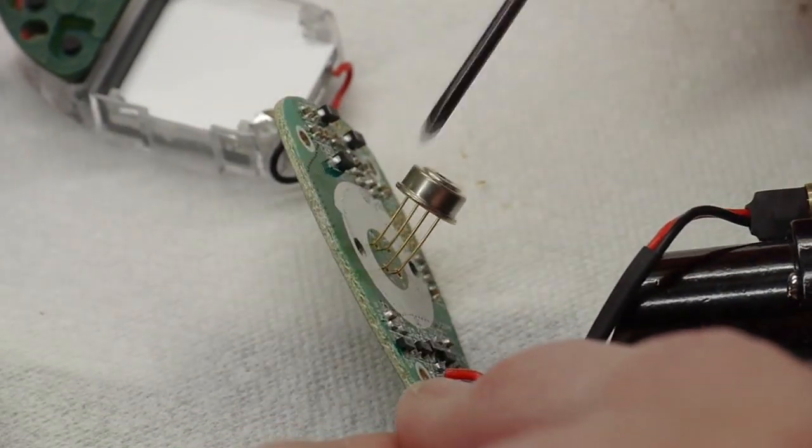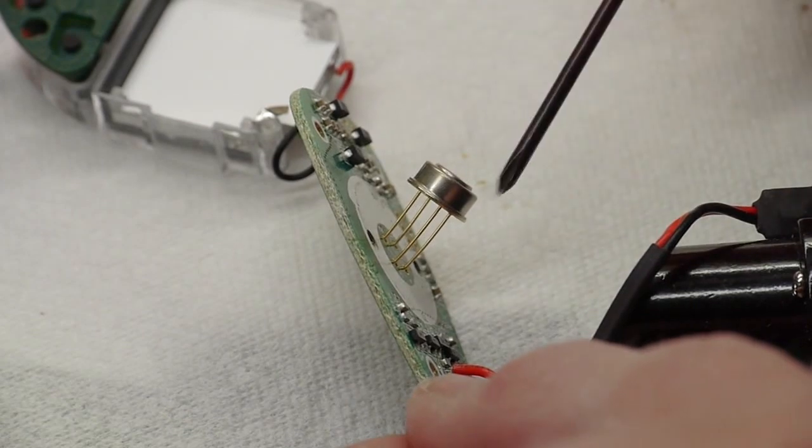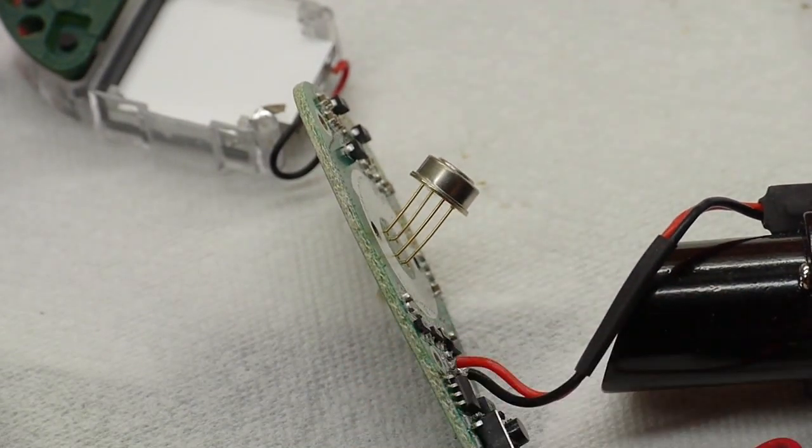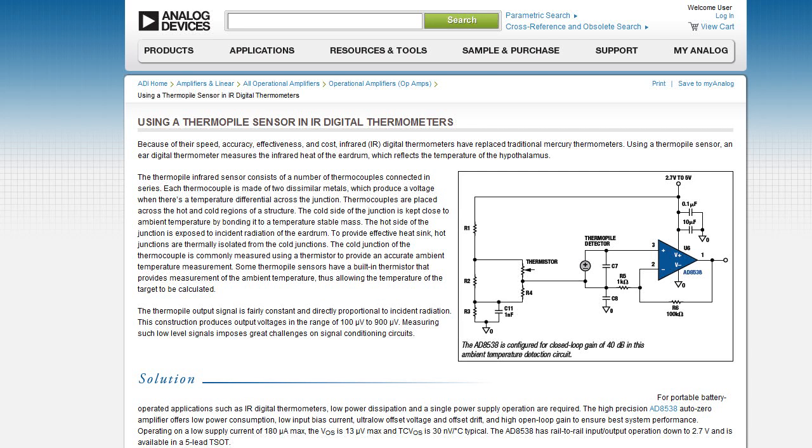So the plan now is to desolder this from the board and hook it up to an Analog Devices amplifier. I found an app note on the web using a very low DC offset chopper type op-amp. Yeah, you can amplify that millivolt signal from the sensor here and turn it into something like a couple of volts so that you can actually digitize it and then store it.